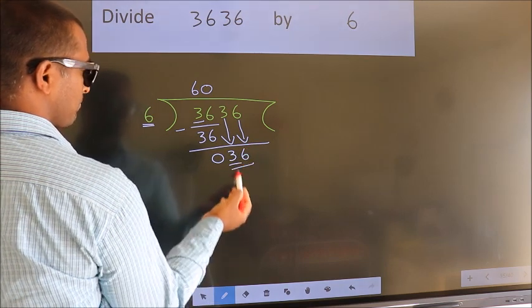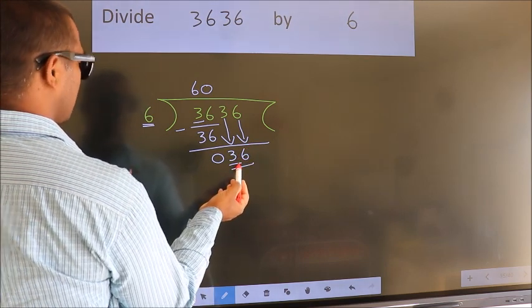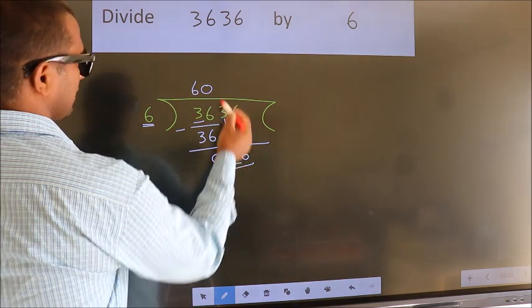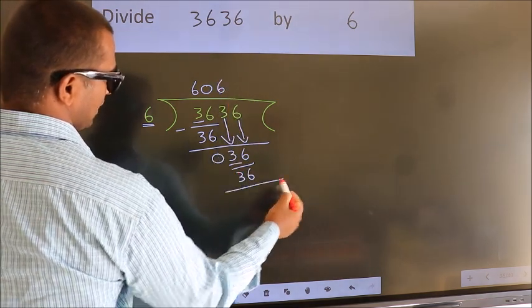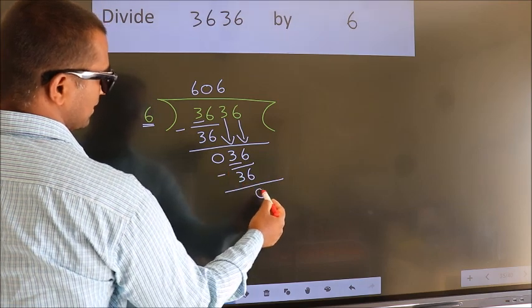So 36. When do we get 36? In the 6 table. 6 times 6 is 36. Now we subtract. We get 0.